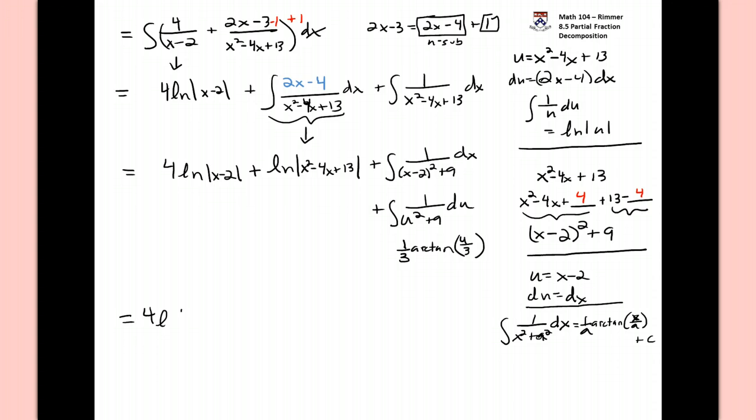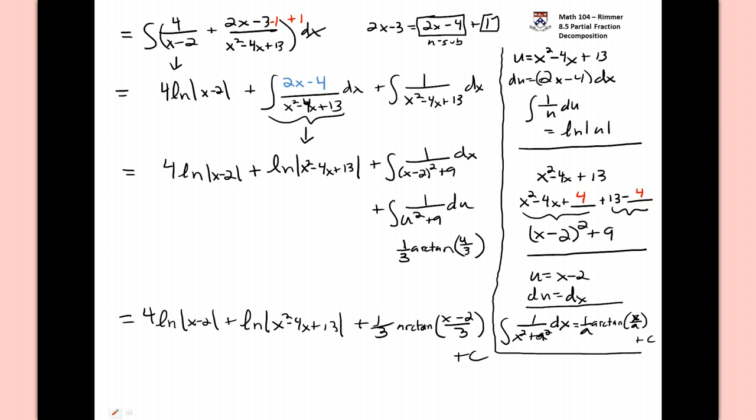Which we have to trade back in for x's. Final answer then would be 4 natural log of the absolute value of x minus 2 plus the natural log of the absolute value of x squared minus 4x plus 13, and then finally plus 1 third the arc tan of u which was x minus 2 and that's over 3 plus a constant. And that would be the answer to your question. And we have the final answer then. We have found the antiderivative, and this is an example of one that has an irreducible quadratic in it and the things that can happen when you have that.